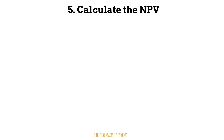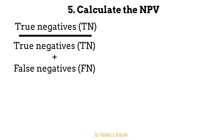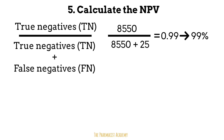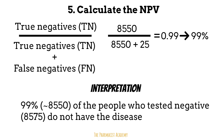Now let's calculate the NPV. To calculate that, we take the true negatives and divide by the total of the true negatives and the false negatives. In this case, that's 8,550 divided by 8,550 plus 25, giving 0.99 or 99%. We interpret this as 99% of the people who tested negative do not have this disease. The NPV is so high because within a low-prevalence population, most people won't have the disease anyway, so a negative result is almost always correct. This is why we take prevalence into consideration when calculating PPV and NPV, which further helps us evaluate the accuracy of our diagnostic test.